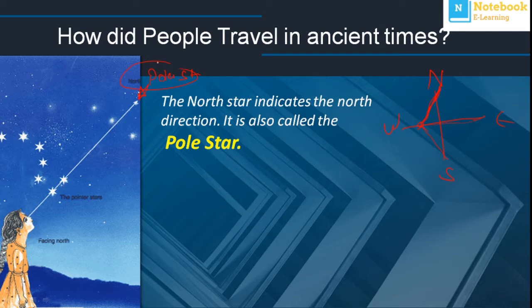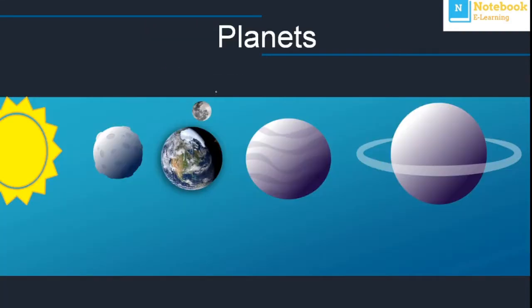Now let's understand celestial bodies that do not have their own heat and light. Stars have their own heat, but some other celestial bodies do not have their own heat and light — we call those planets. The word 'planet' comes from the Greek word 'planetists,' which means wanderers.